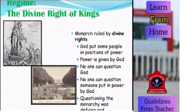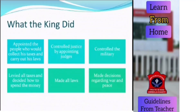The condition was critical for the third estate because the divine rights of the kings were too extensive. The king said that power was given by God and nobody could question it. This is a picture of the Palace of Versailles, which was extravagantly maintained by the court. The king appointed people to collect taxes, controlled justice by appointing judges, controlled the military, made laws, made decisions regarding war and peace, and levied all the taxes. All powers were concentrated in the hands of the monarch.